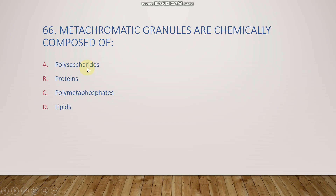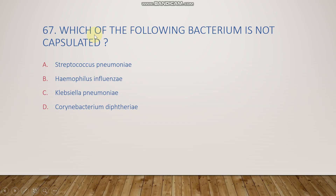The next question: metachromatic granules are chemically composed of polysaccharides, proteins, polymetaphosphates, or lipids? The right answer is option C, polymetaphosphates. These polymetaphosphates, or metachromatic granules, are inclusion bodies present in bacteria.